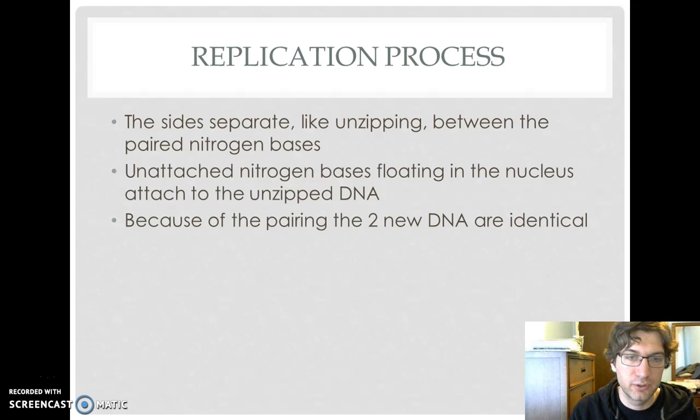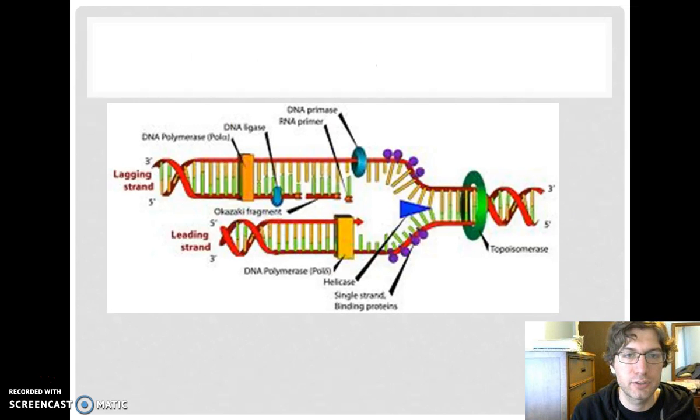Occasionally, your DNA doesn't necessarily unzip correctly. Occasionally, it can't find a nitrogen base to put in there. Those are fairly rare occurrences, but that's what we call a mutation when that happens. But in general, because they only pair with one another, adenine and thymine, guanine and cytosine, you are going to get identical DNA when you're done with the replication process.